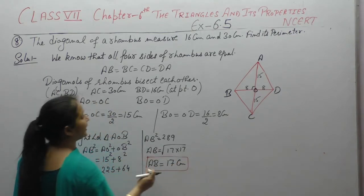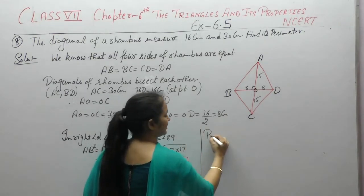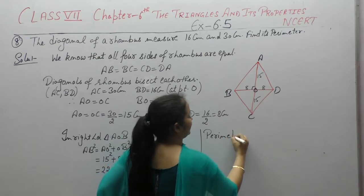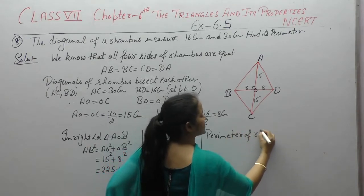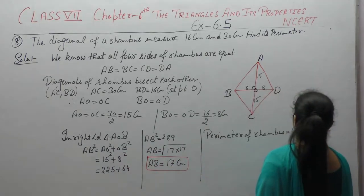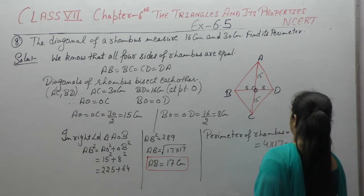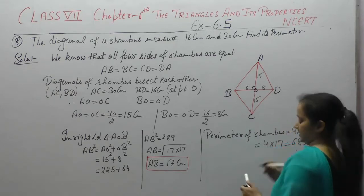Now what do we need to find? Perimeter of the rhombus. Four sides are equal in rhombus. So perimeter of rhombus is 4 into side. Or you can write AB plus BC plus CD plus DA. So 4 multiply by 17, 68 centimeters.